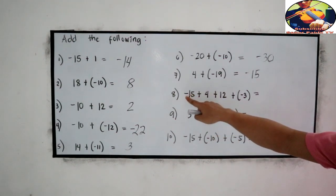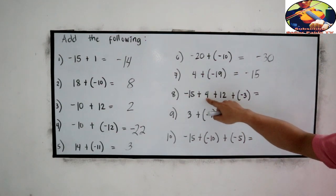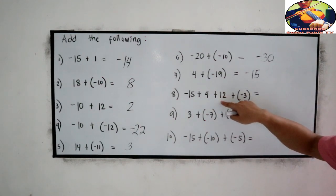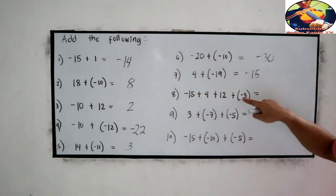Number 8: Negative 15 plus 4. Subtract. So that is negative 11. Plus 12. Negative 11 plus 12. Positive 1. Plus negative 3. Negative 2.